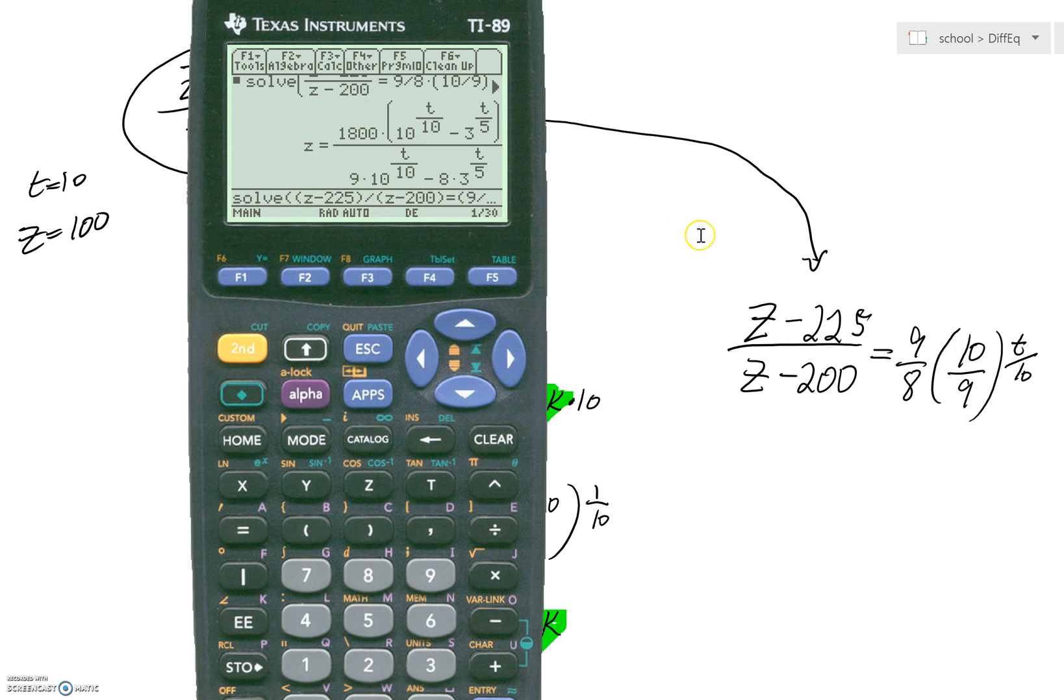and you've got your left side, just like we have over here. And the right side, I'm just typing in the 9 eighths times 10 ninths, bump it up to the t over 10 power. But you always have to say comma and say what you're solving with respect to. You're solving with respect to z here. So, you can see the screen has that for us right now.